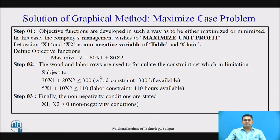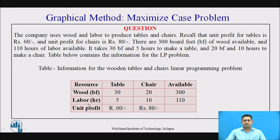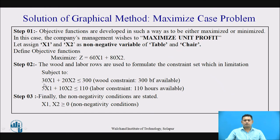The second step is to define the constraints. There are two constraints — wood and labor — as observed in the table. Converting these constraints into equations: the company gives restrictions on raw material availability and labor hour availability, resulting in inequality equations. The wood availability constraint is: 30x1 + 20x2 ≤ 300. The labor hours constraint is: 5x1 + 10x2 ≤ 110. Additionally, the decision variables are restricted to x1, x2 ≥ 0, which is most important.